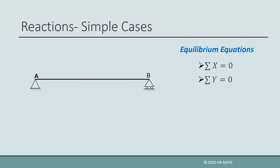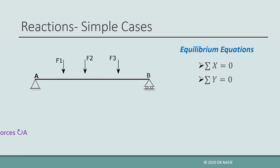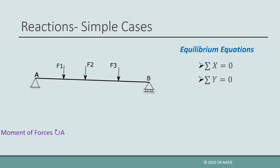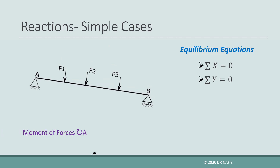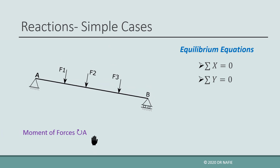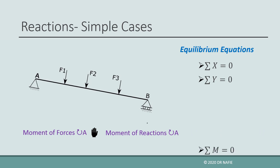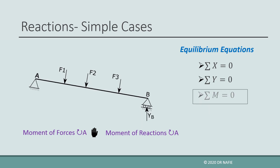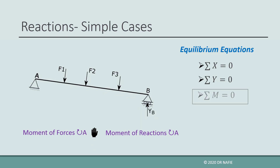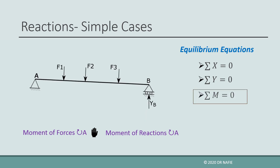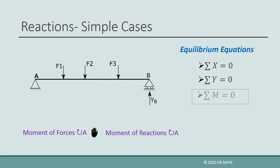In order to prevent rotation, the moment generated by the forces around any point should be balanced by the moment generated by the reaction around the same point. This gives the third equation, sigma m equals zero.